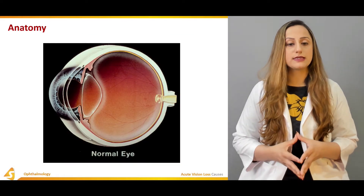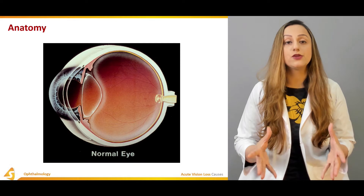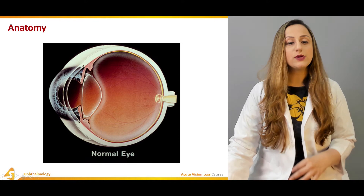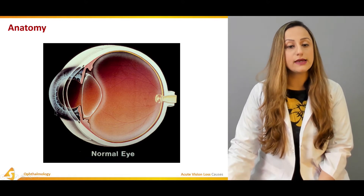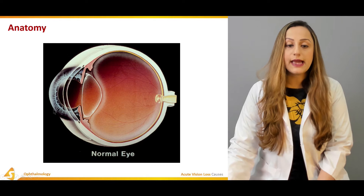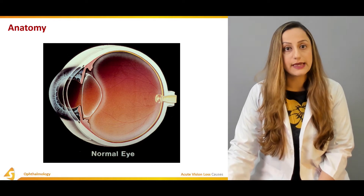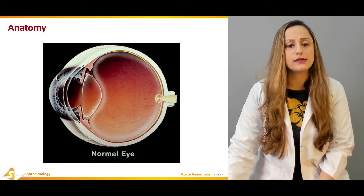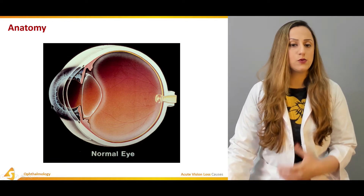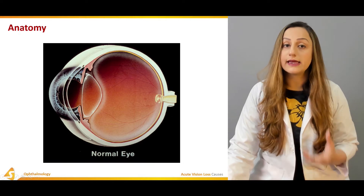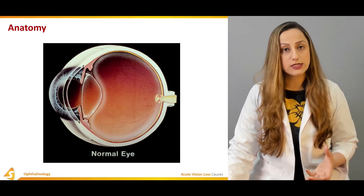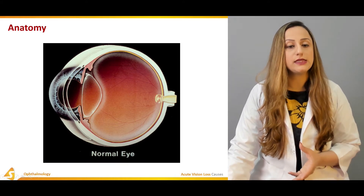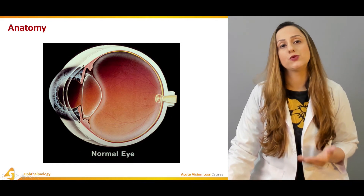Knowing the anatomical structures of the eye is very important. The cornea is one key structure. It can be a corneal aberration, keratitis — that is basically inflammation — or any trauma to the cornea. The cornea covers the lens, and any pathology there can hinder vision in a patient, contributing to the development of acute vision loss.